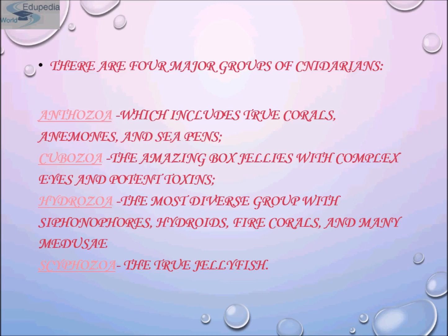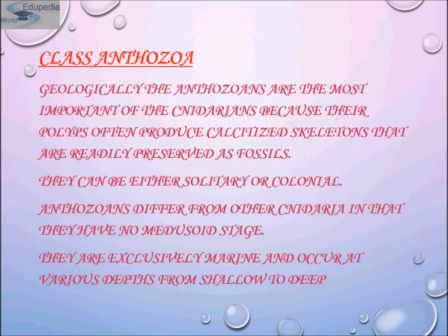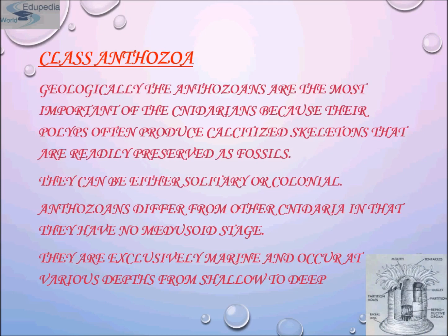Now we will discuss the major groups in detail. First is Anthozoa. Geologically, anthozoans are the most important of the cnidarian group because their polyps often produce calcified skeletons that are readily preserved as fossils. They can be either solitary or colonial. Anthozoans differ from other cnidarians in that they have no medusoid stage — the polyp stage is the only zooid and medusa is completely absent. Examples are sea anemones and corals like Fungia and Favia. They are exclusively marine.